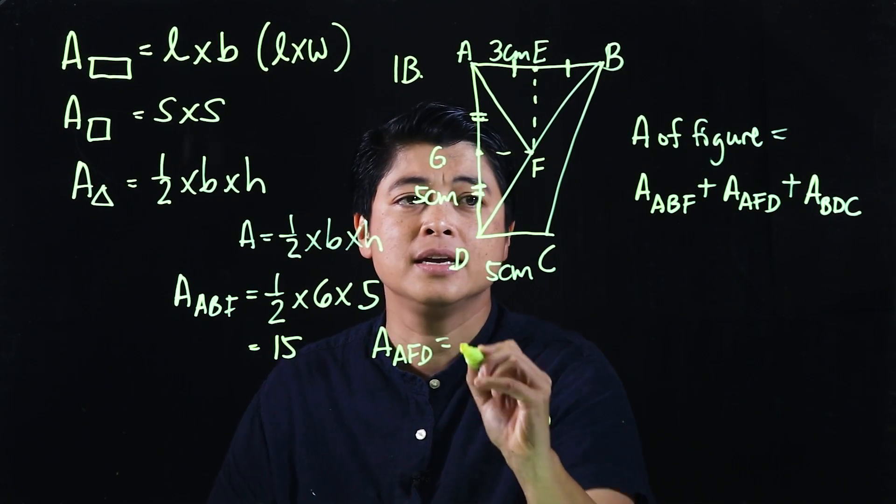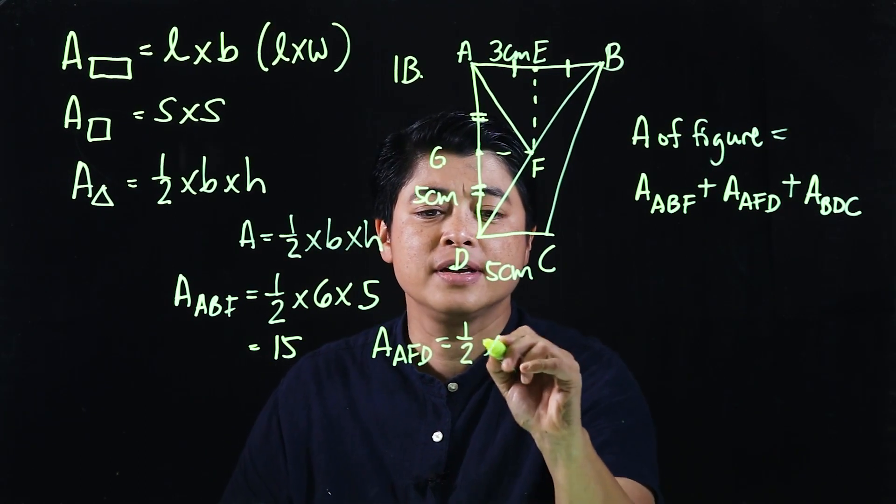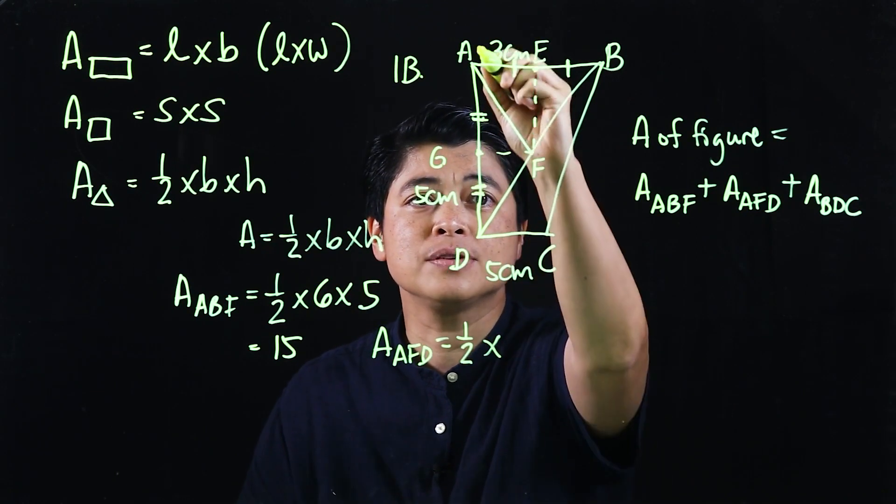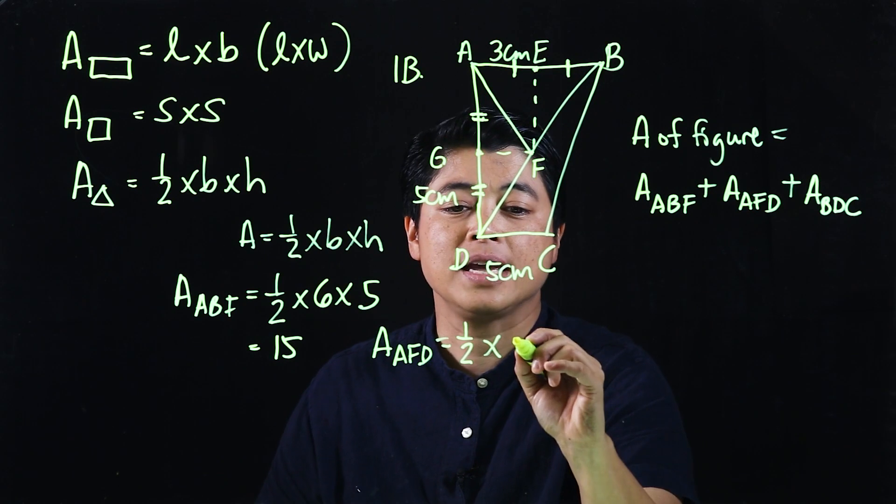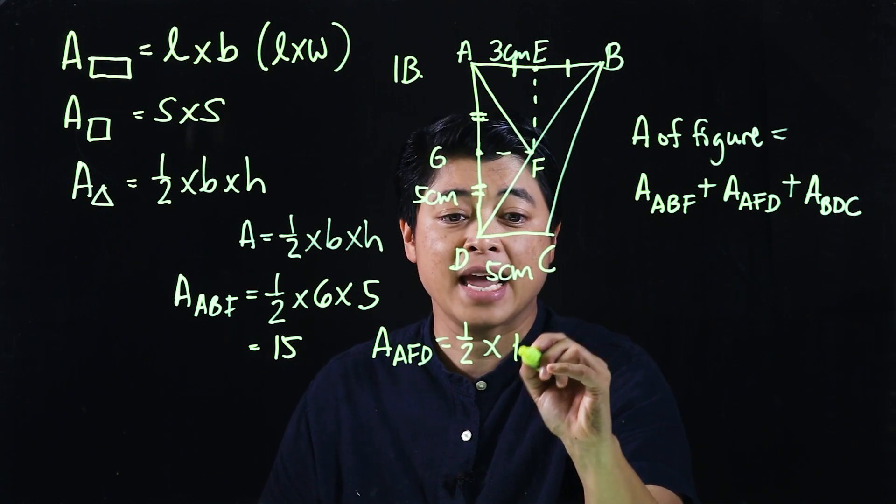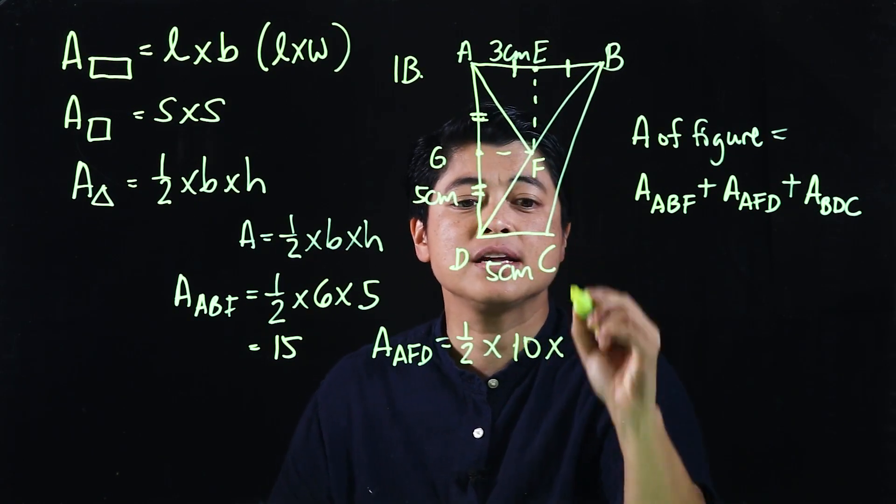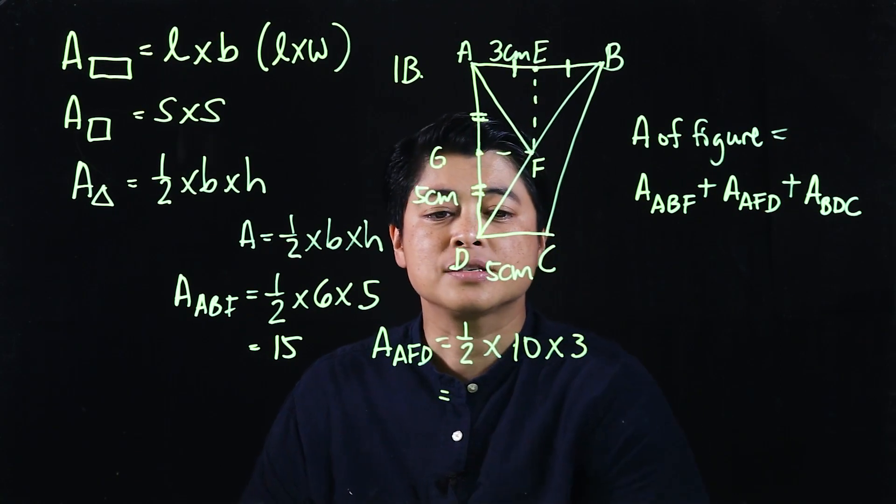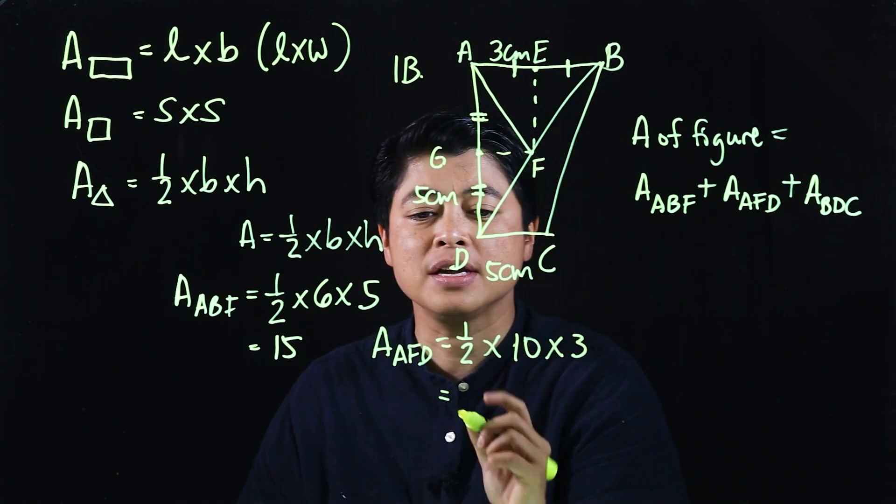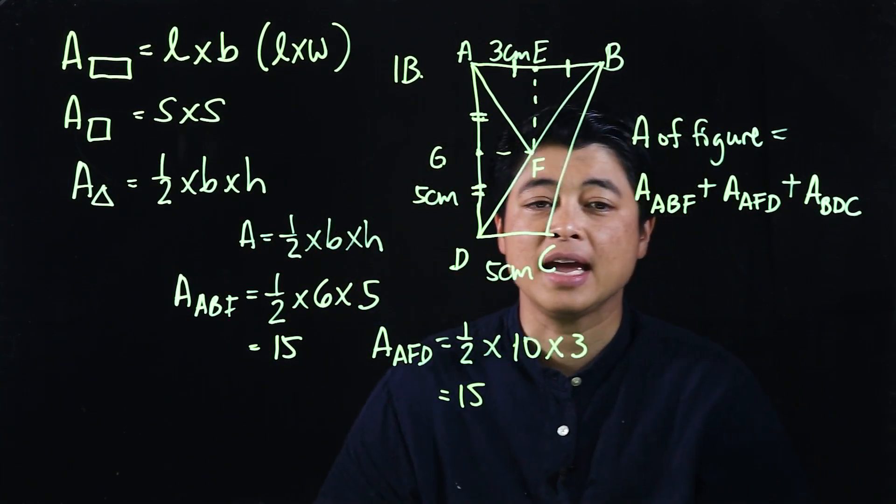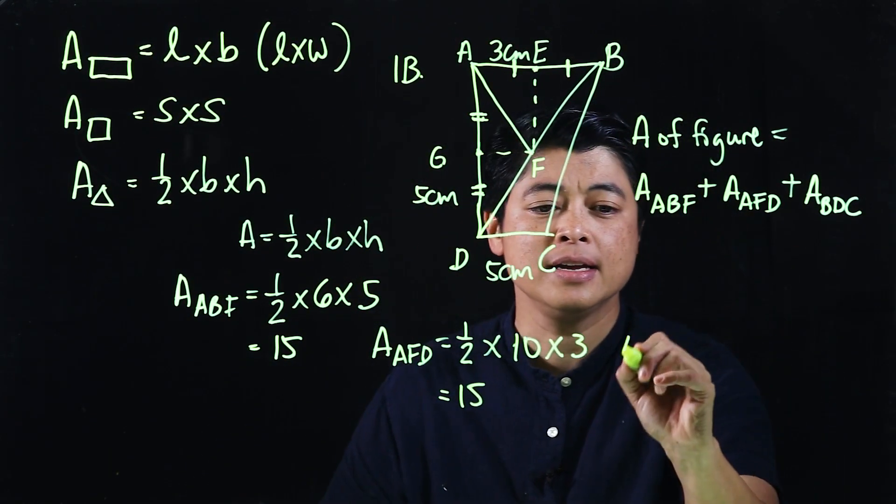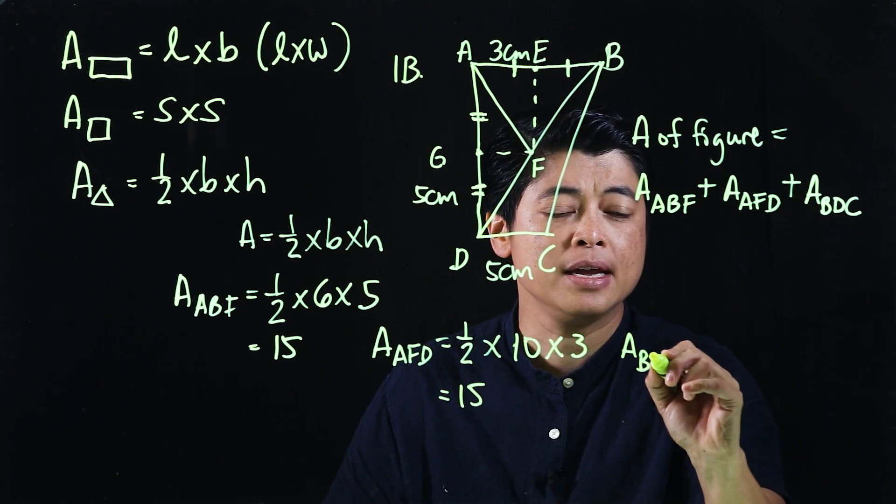The area of the next triangle AFD is one-half times the base, which is 5 plus 5, so that means that will be 10, and then the height which is 3. That will be 30 divided by 2, which is 15.